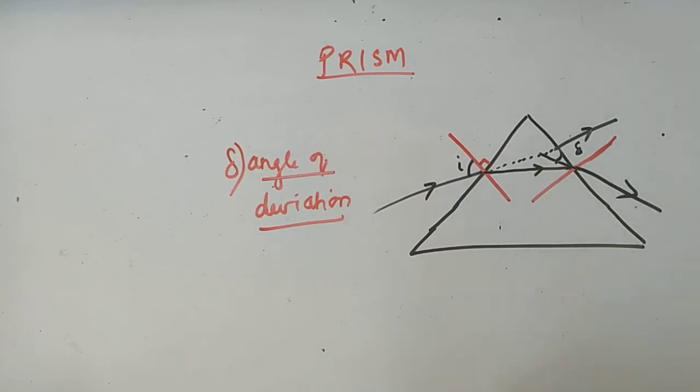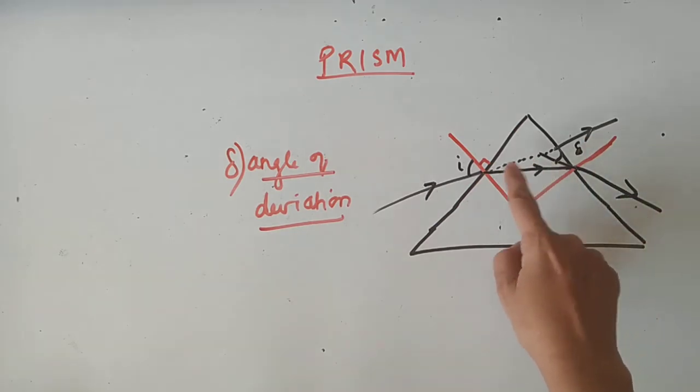So this term you have to remember: the angle which is made by the incident ray and the emergent ray in case of prism is known as the angle of deviation.